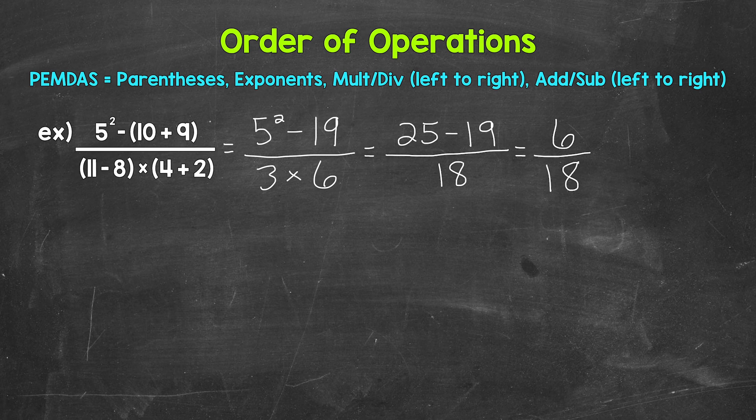Now 6 18ths is our final answer. We have a proper fraction here. The numerator is less than the denominator. And that's okay. When this happens, we can always look to see if we can simplify the fraction.